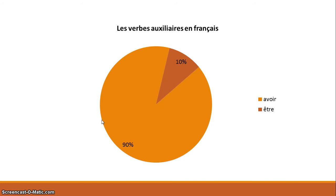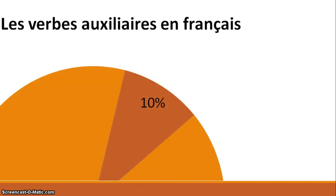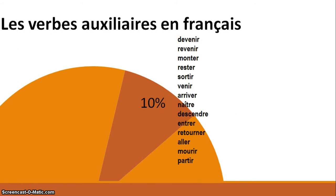I made up the 90 and 10% just to give you a good visual. If we zoom in, there is a list of verbs you are familiar with, which you called motion verbs: devenir, revenir, monter, rester, sortir, venir, arriver, naître, descendre, rentrer, retourner, aller, tomber, mourir, and partir. These are what's called Dr. Mrs. Vander Tramp verbs or motion verbs. I think a more accurate way to describe these is that they are change of state verbs. Most of them do imply motion, but it's more accurate to say they are change of state verbs.